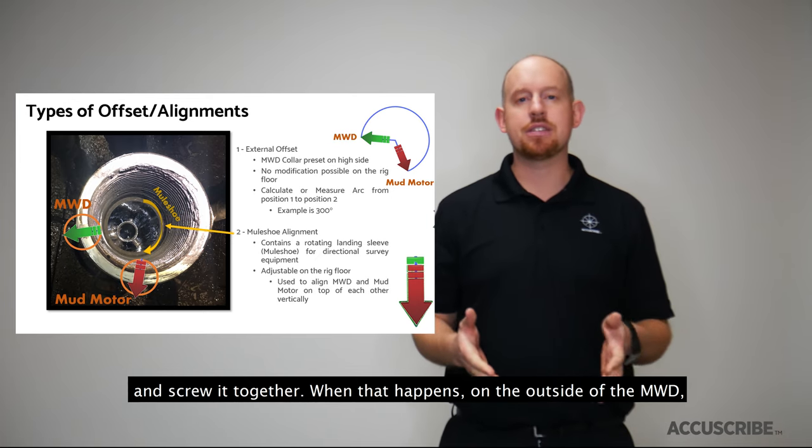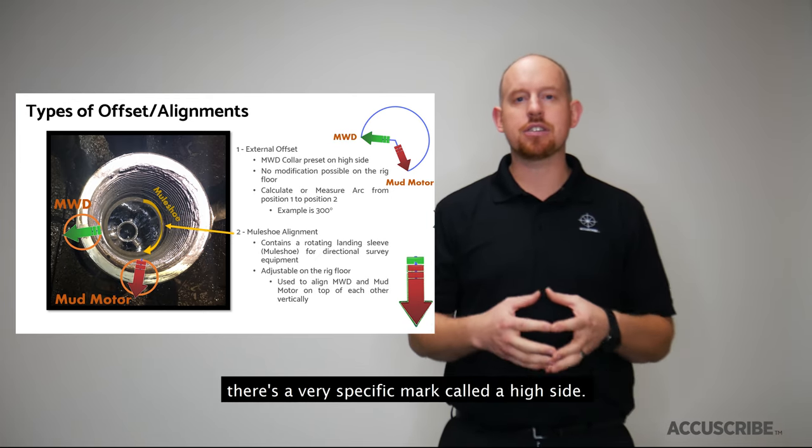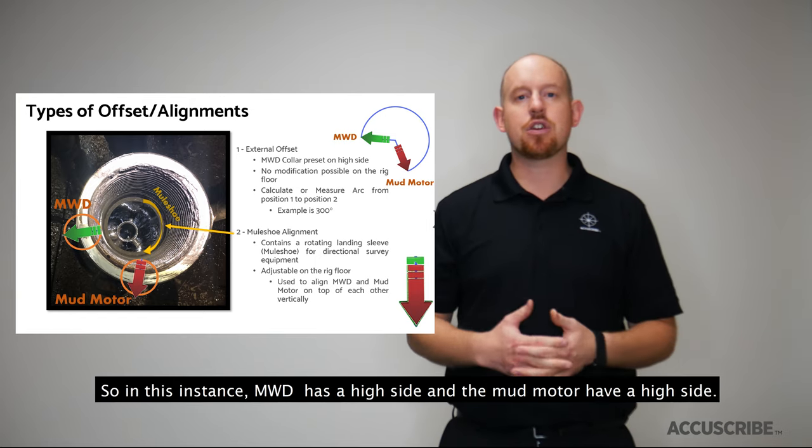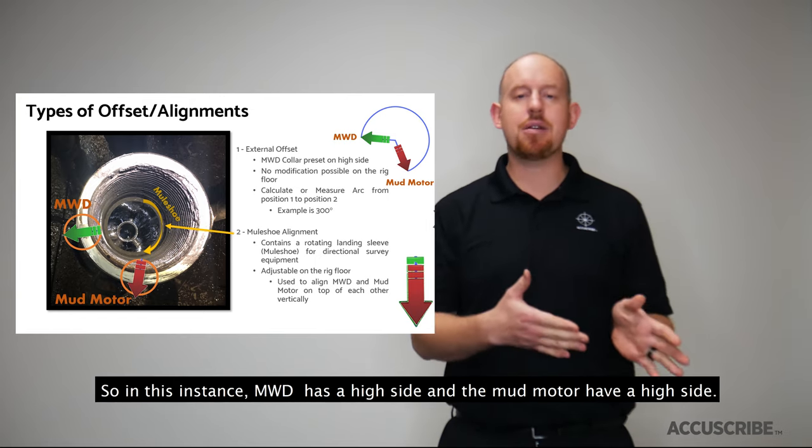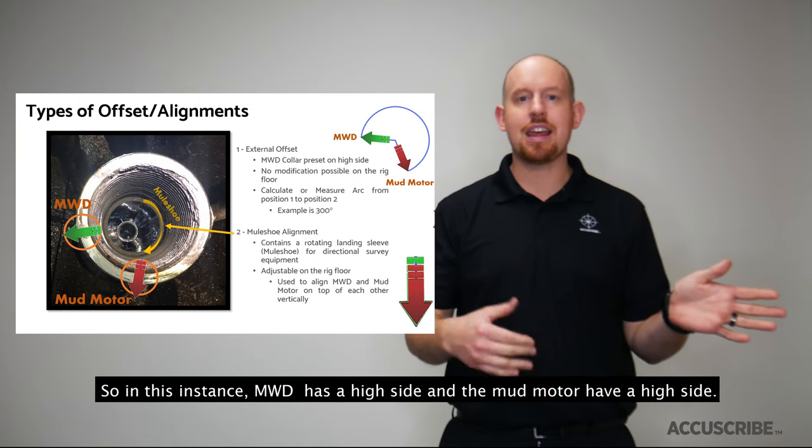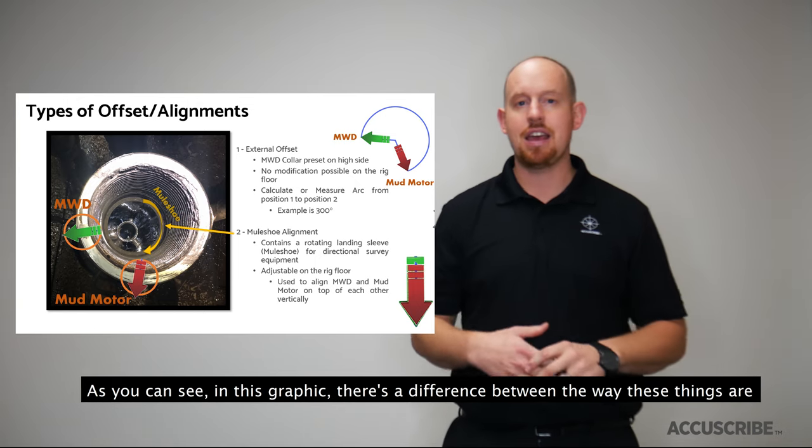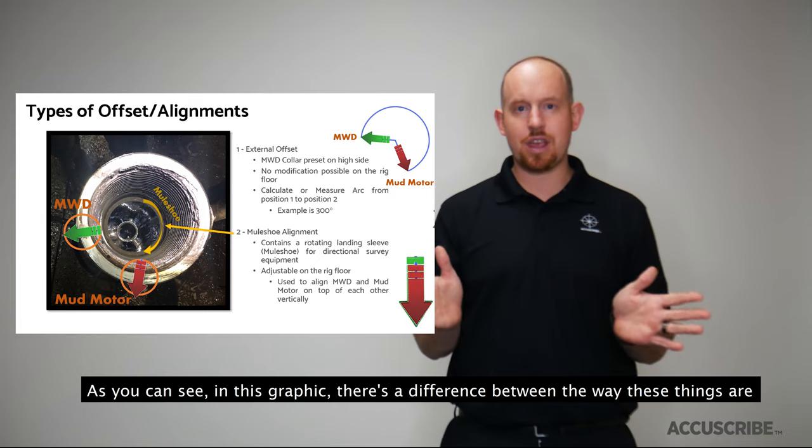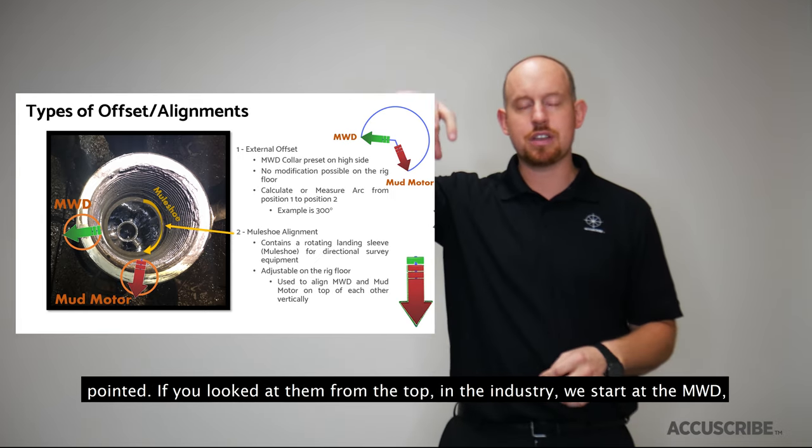When that happens on the outside of the MWD there's a very specific mark called a high side. So in this instance the MWD has a high side and the mud motor has a high side. As you can see in this graphic there's a difference between the way these things are pointed if you looked at them from the top.